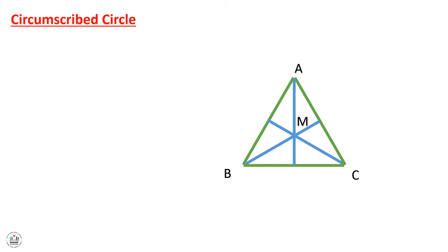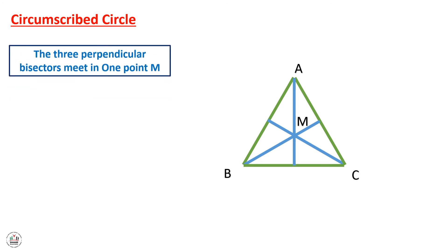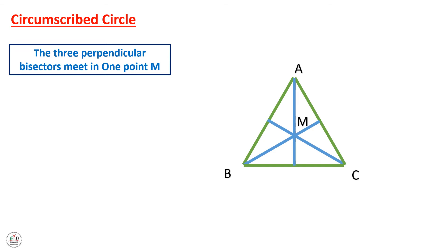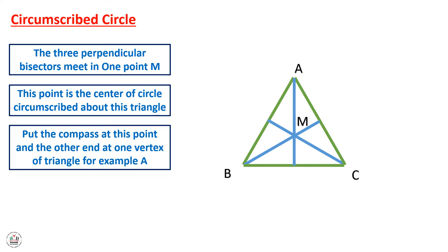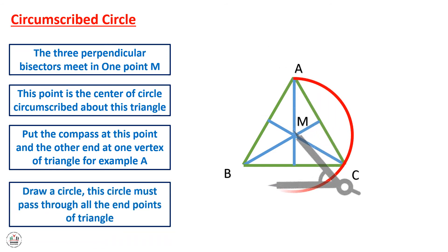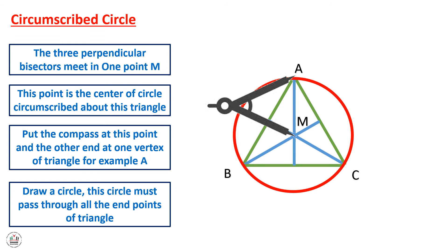After learning how to draw the three perpendicular bisectors for any triangle, we will now learn how to draw the circumscribed circle. Assume we have triangle ABC. The three perpendicular bisectors meet in one point M, which is the center of the circumscribed circle. Place the compass pin at point M and the other end at any vertex — A, B, or C — and draw a circle. This circle passes through all three vertices of triangle ABC and is called the circumscribed circle about triangle ABC.